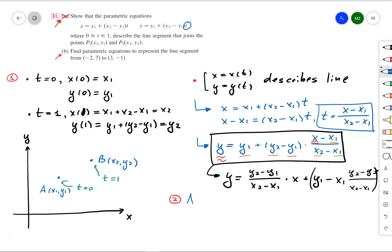And finally, let's do part b. Let's take a point (-2, 7) and a point (3, -1). And what do I want to do? I want to describe the parametric equation which is going to be the line segment between point A and B.